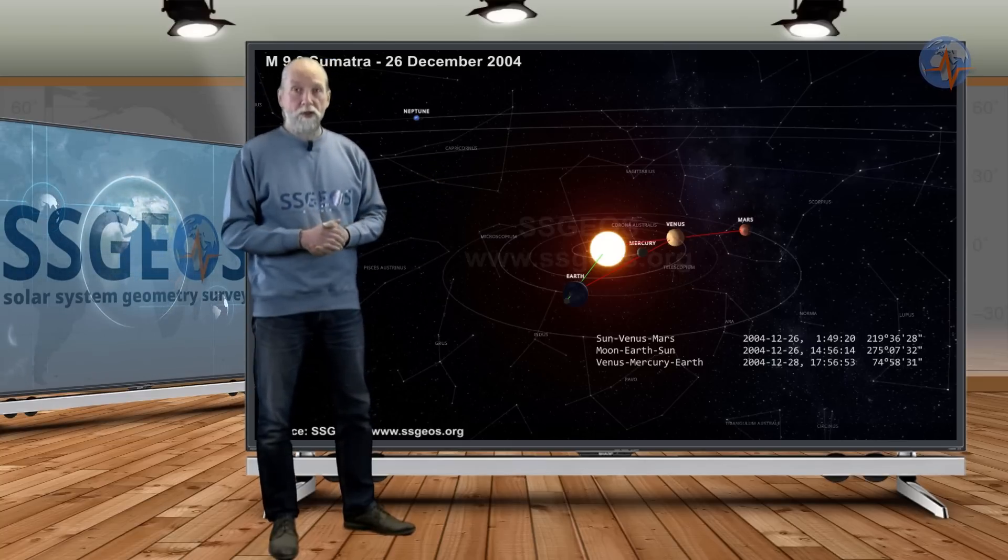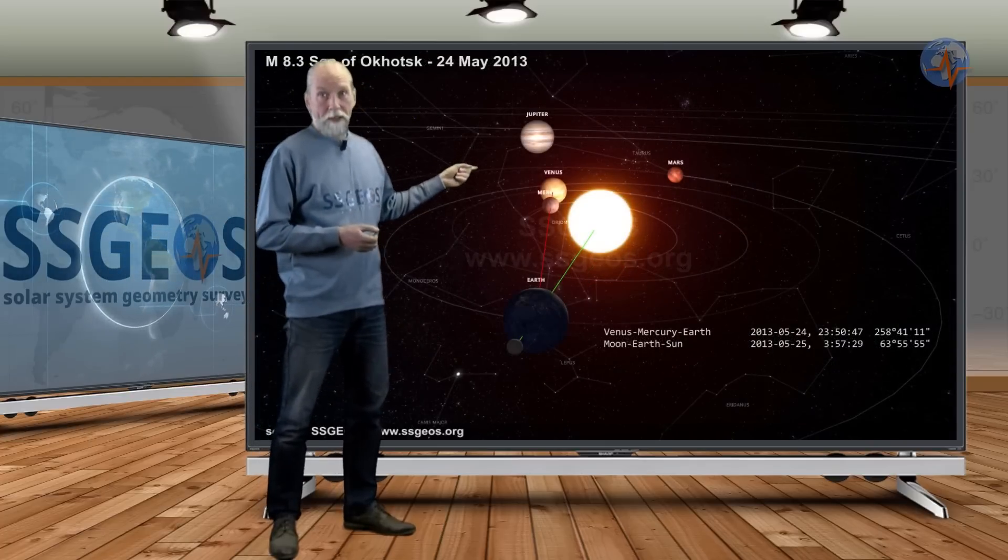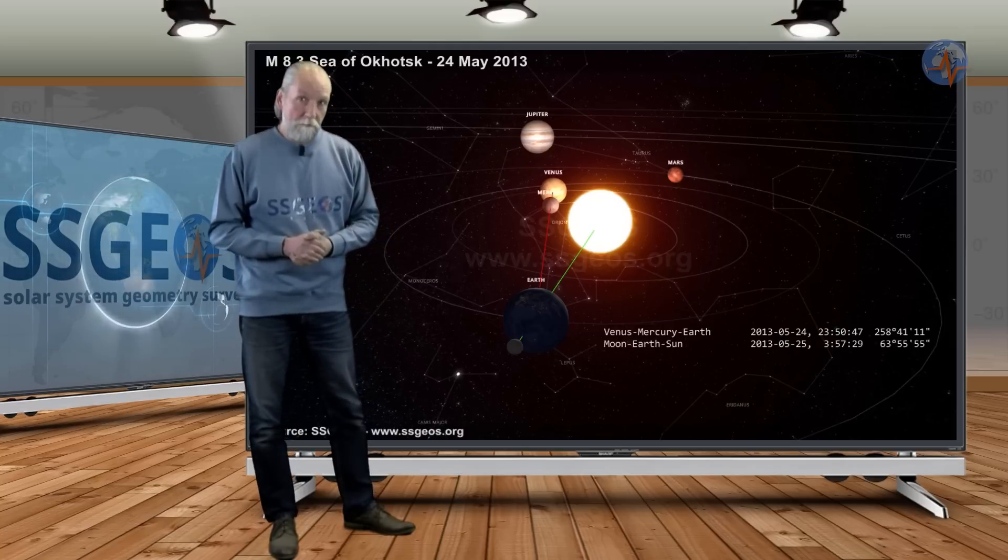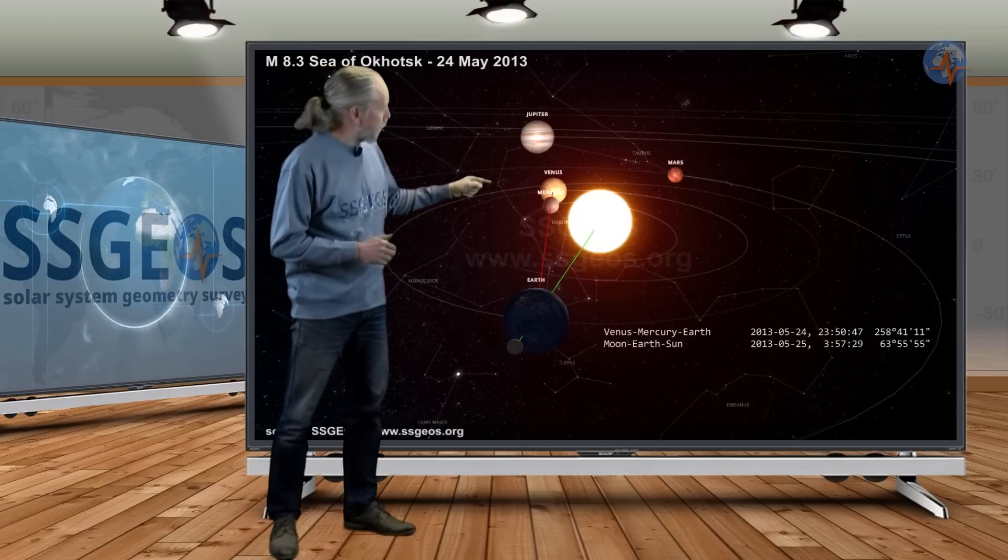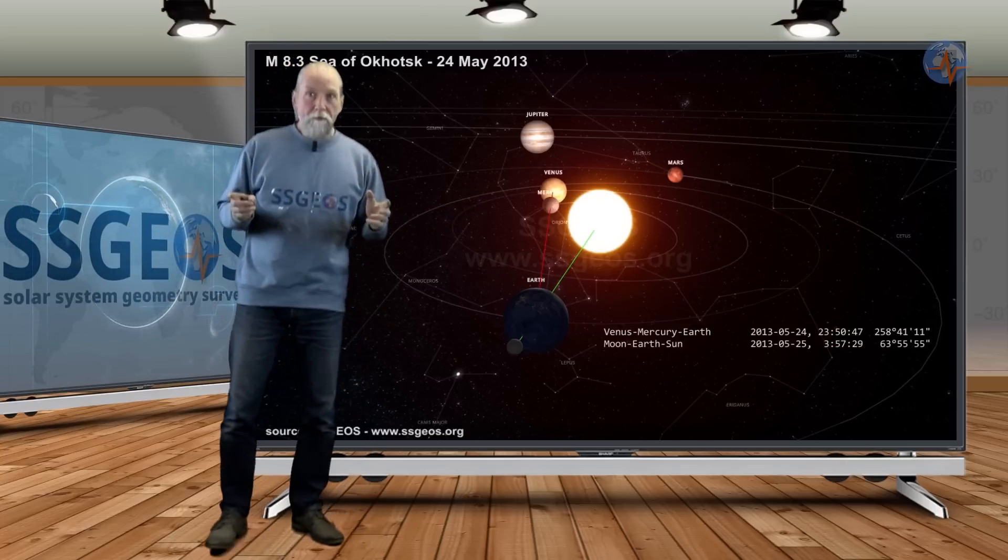We can take another example from 2013—a magnitude 8.3 at the Sea of Okhotsk, also at the time of full moon. And again, we see that Earth was in a close conjunction with Mercury and Venus.